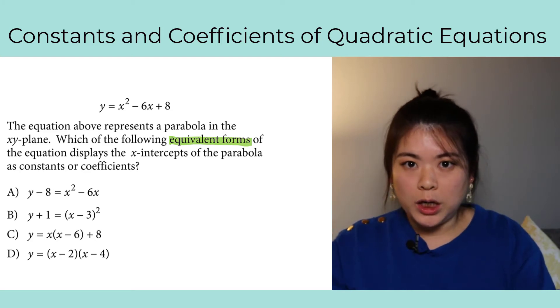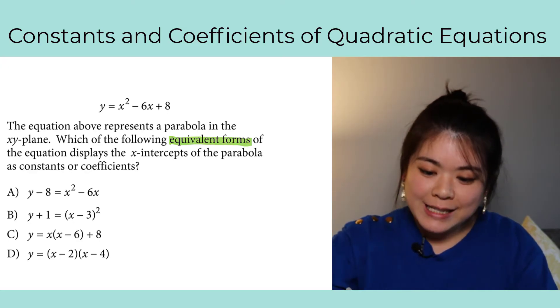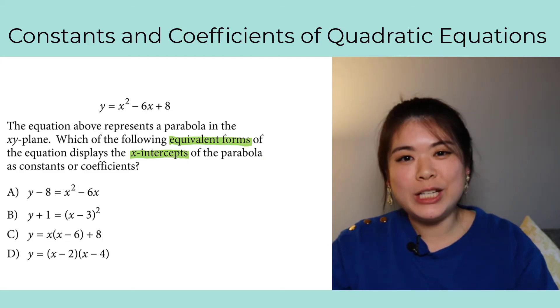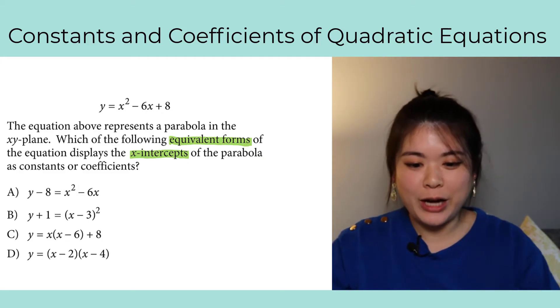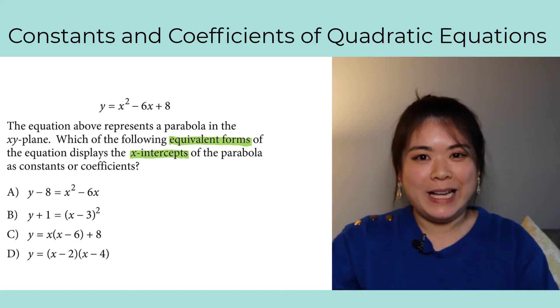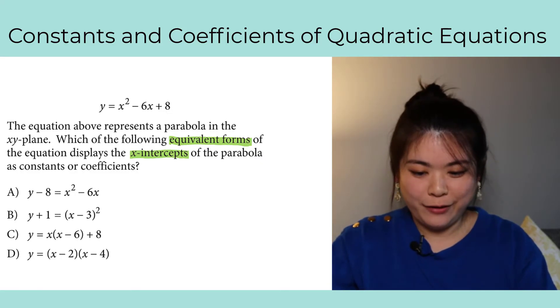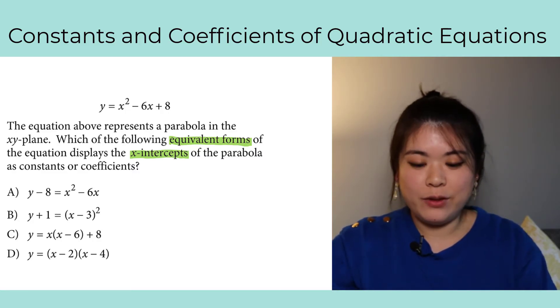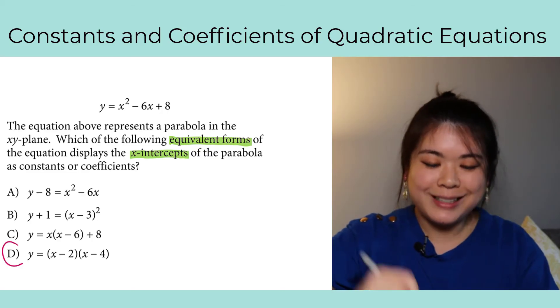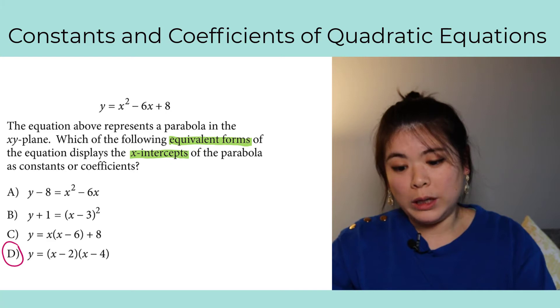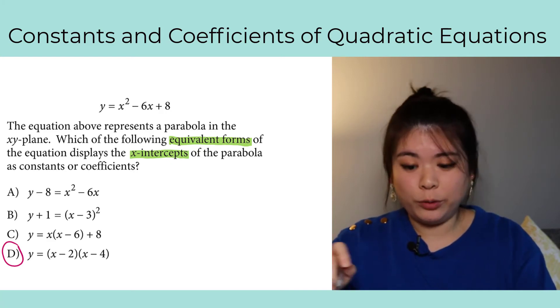What you need to pay attention to, what the actual key to these questions is, you need to know what keyword to look for so you know how to find the right answer. The keyword here is x-intercepts, the x-intercepts of the parabola. We just talked about, right, what form of the quadratic equation will give you the x-intercepts? If you recall, it was the factored form.